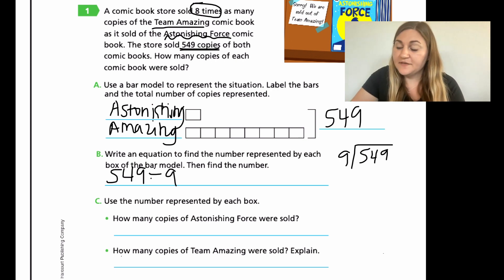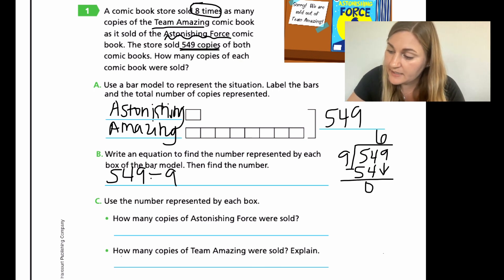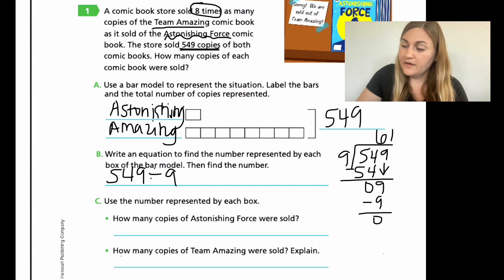Nine into 54 is going to be six. So six times nine is 54. That gives me zero. I'm going to bring down my nine. Nine into nine is just one. So 61. So I know that that problem is equal to 61.